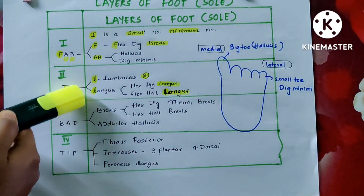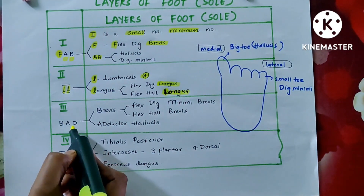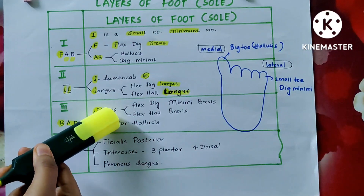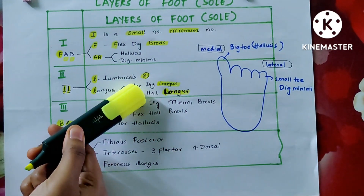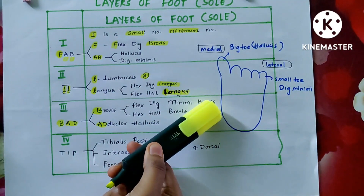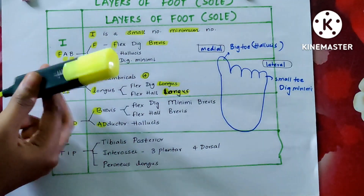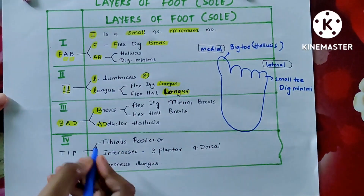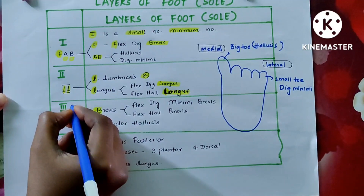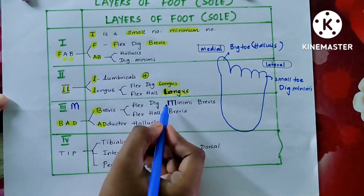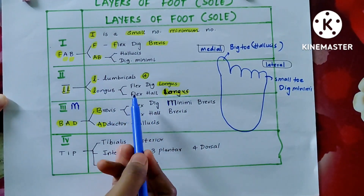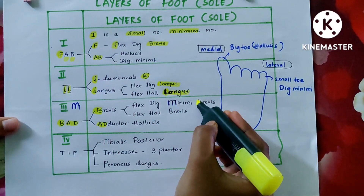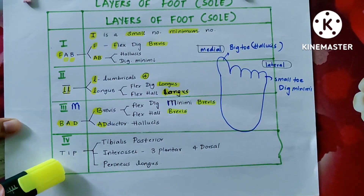The first layer has flexor digitorum brevis, so the second layer is about longus — flexor digitorum longus. The third layer mnemonic is BAD: B is for brevis and AD is for adduction. The brevis muscles here correspond to the longus muscles of layer two, so we have flexor digitorum minimi brevis. In the first layer you have digitorum brevis; in the third layer you have minimi brevis. You can derive the Roman numeral III from the letter M, giving flexor digiti minimi brevis, and hallucis longus becomes hallucis brevis, because the third layer is all about brevis.